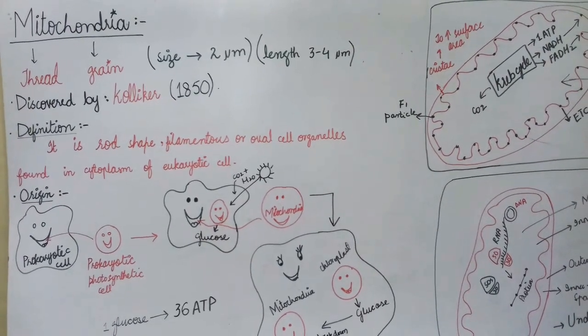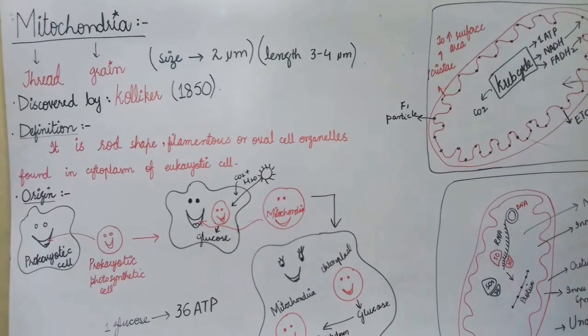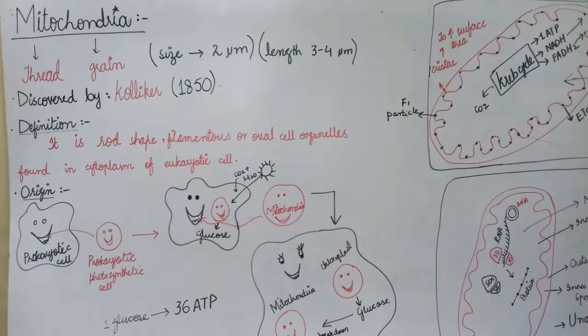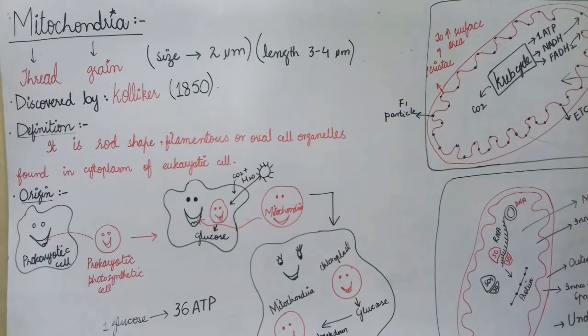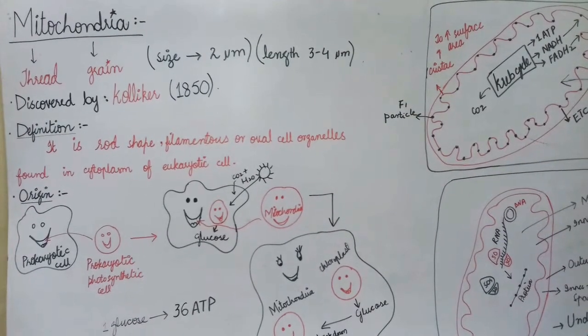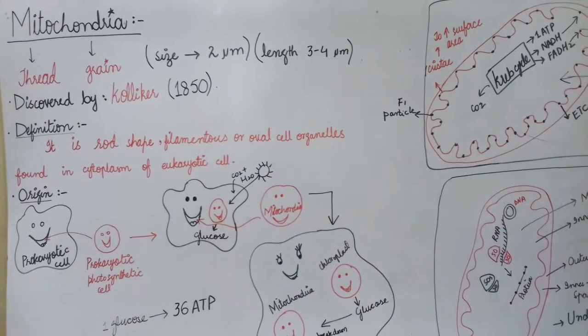Hello everybody, and welcome to Biological World. Now we will discuss mitochondria. Basically, mito means thread and chondria means grain. It is about the size of 2 micrometers, and length is 3 to 4 micrometers.